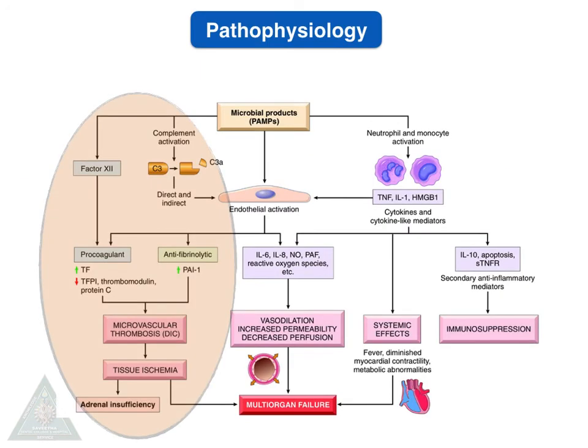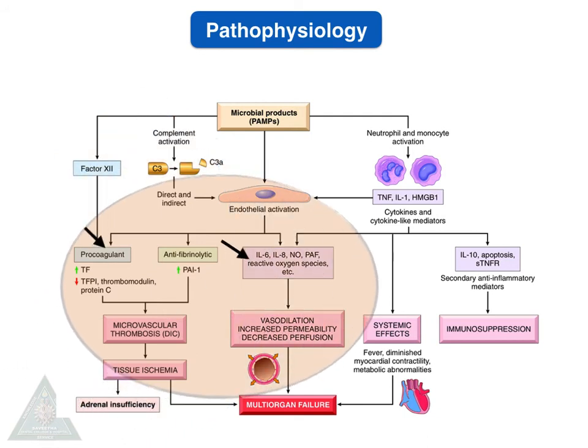The pathophysiology of septic shock starts from microbial products, which result in complement activation and clotting factor activation, leading to microvascular thrombosis and tissue ischemia. These microbial products also activate endothelial cells to secrete cytokines, interleukin-6 and -8, nitric oxide, and reactive oxygen species, which activate clotting factors, resulting in tissue ischemia, vasodilation, increased permeability, and decreased perfusion.